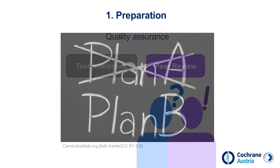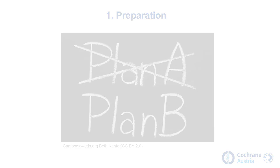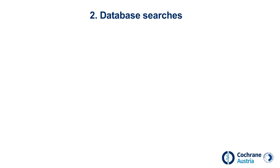Good preparation is the basis for a successful systematic literature search. In this phase, the entire search process is planned, so it's important to spend enough time here. When all the preparation steps have been completed, the actual implementation of the systematic search can begin.